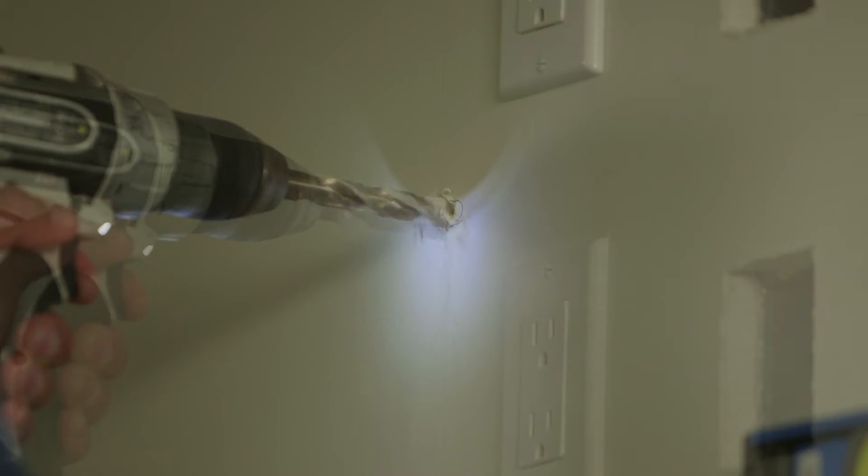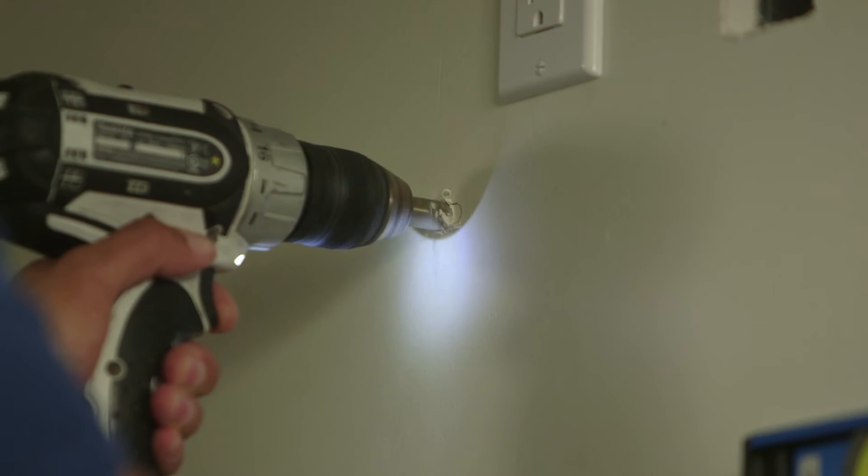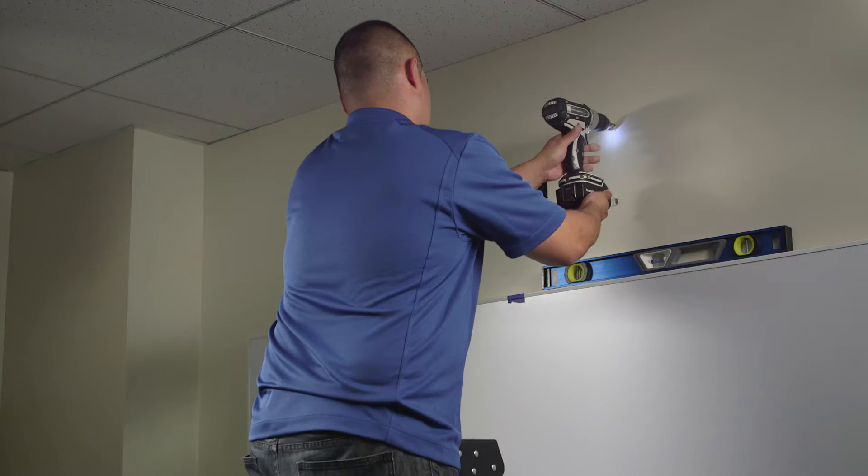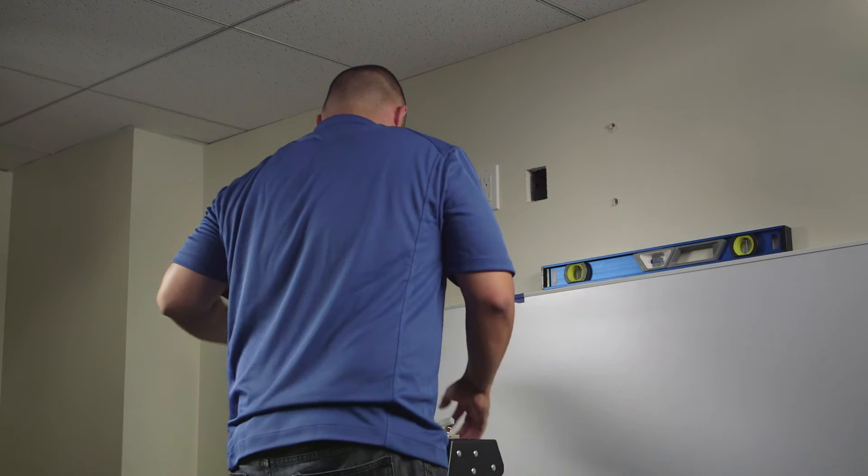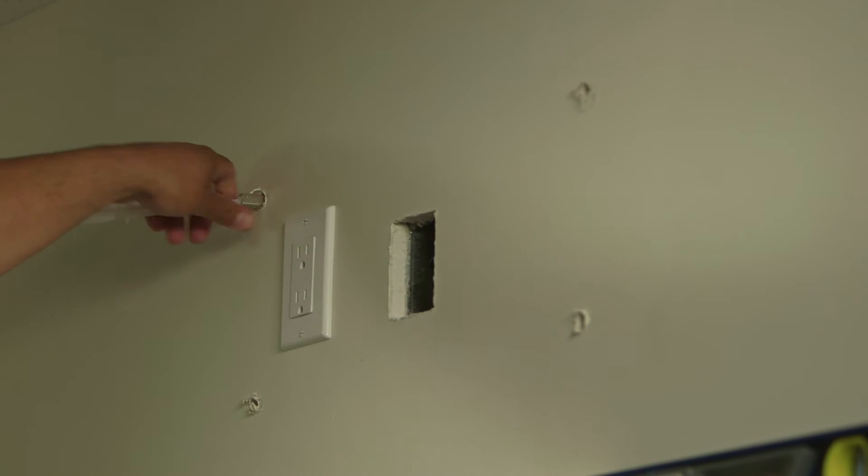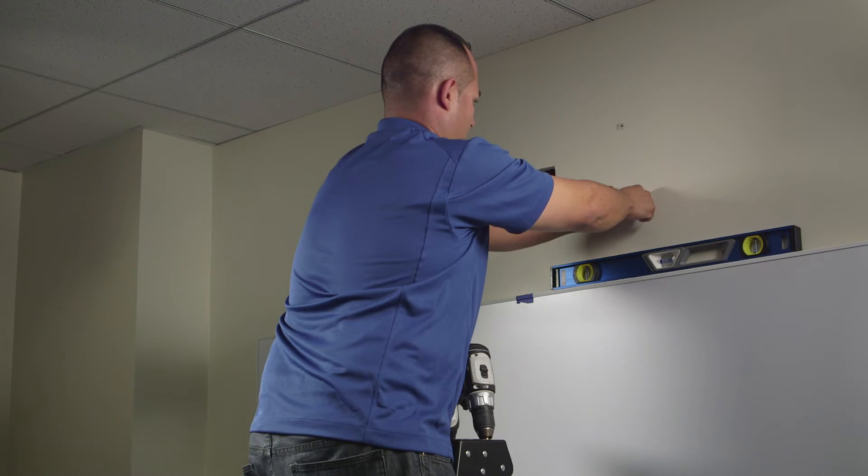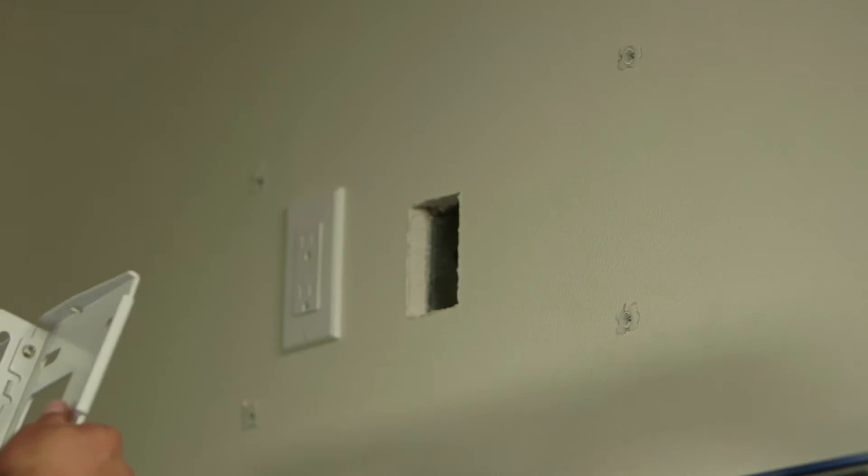Because there are many different materials a wall can be made from, screws for mounting the wall plate are not included with the BrightLink projectors. Be sure to use screws and anchors that are appropriate for the type of wall you are installing on.